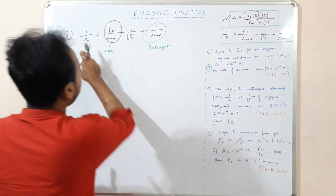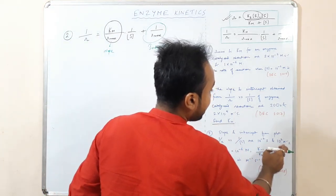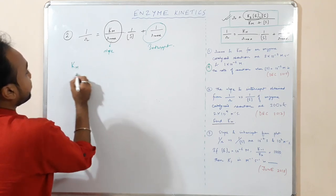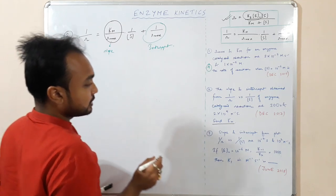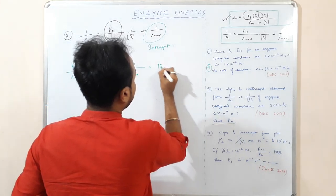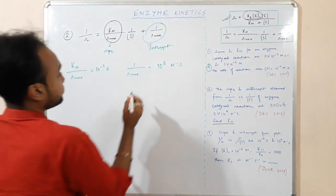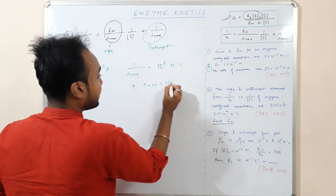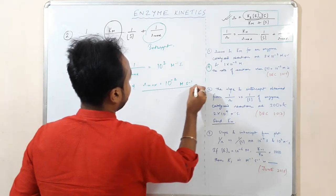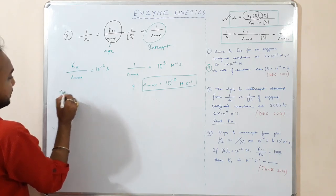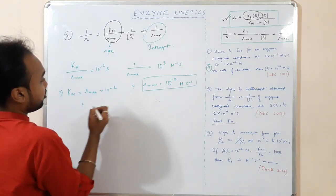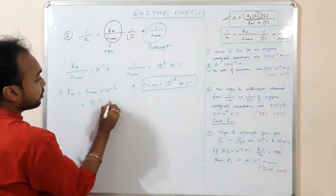The next numerical: the slope and intercept from the 1/R versus 1/S plot are 10⁻² seconds and 10² mol⁻¹·s respectively. From the intercept, 1/Rmax = 10² mol⁻¹·s, so Rmax = 10⁻² mol·s⁻¹. Using slope = Km/Rmax, Km = 10⁻² × 10⁻² = 10⁻⁴ mol.